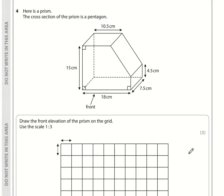Question number 4. We've been told the scale is 1 to 3. We're dividing all of these by 3. 15 divided by 3 is 5 centimeters. 18 divided by 3 is 6. We're only interested in the front elevation. This height is 4.5 divided by 3, which is 1.5. And 10.5 divided by 3 is 3.5.